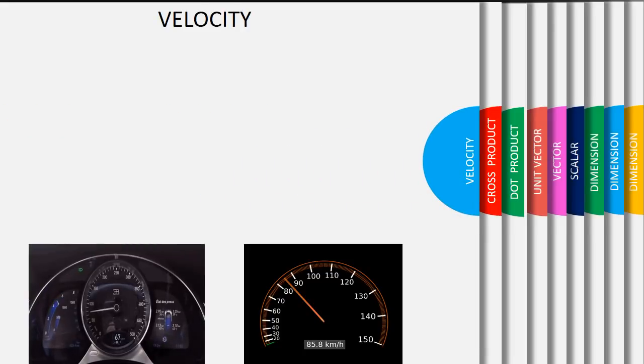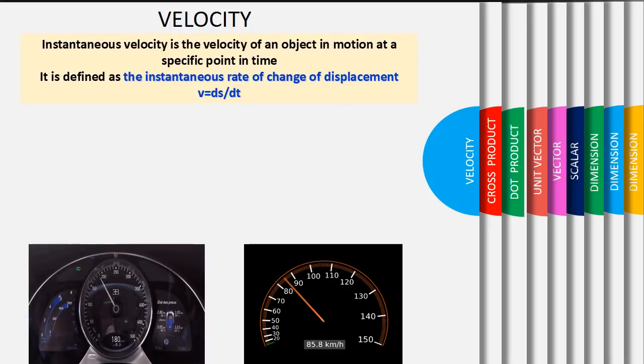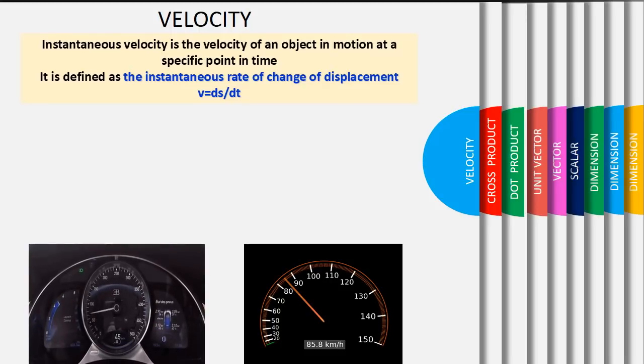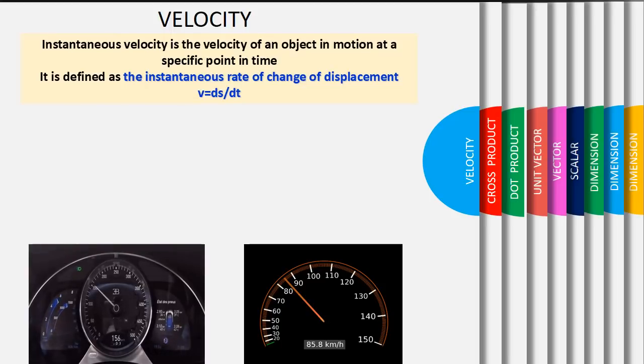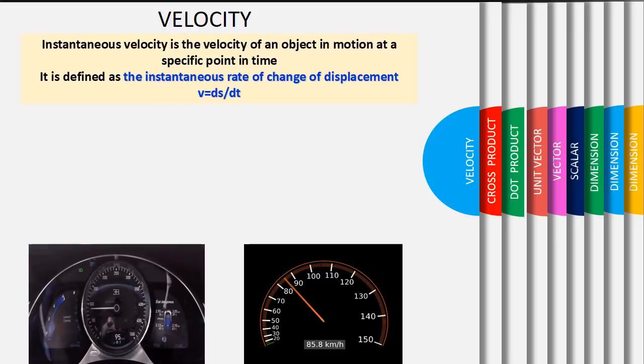Let's continue to the second chapter, linear motion. For this chapter, I will introduce to you the difference between instantaneous velocity, average velocity, and uniform velocity. Refer to the speedometer on the left.